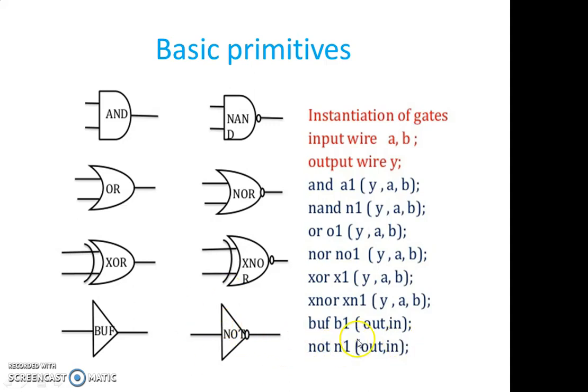For NOT, it has an output first, then an input. Like that you can add a control signal for buffer and NOT. That is like buffer if 0 or buffer if 1. With control signal 0, it is going to transfer, otherwise it is going to declare it as an OFF state. In the same way, you can have for NOT also. Those things have not been discussed here, that is an extension. If you want, you can refer the materials.